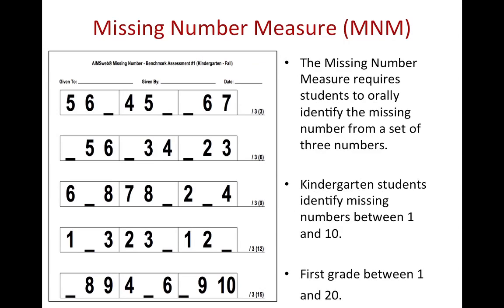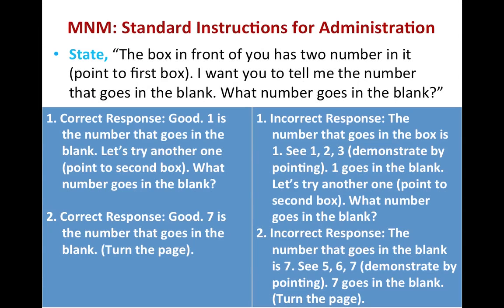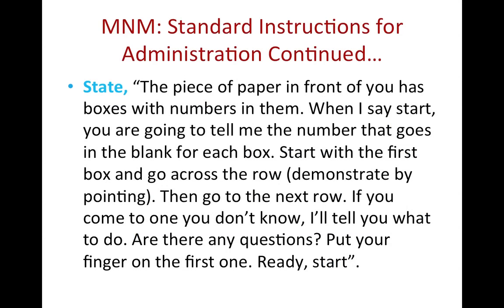The Missing Number Measure requires students to orally identify the missing number from a set of three numbers. Kindergarten students will identify missing numbers between 1 and 10, and first grade students will identify missing numbers between 1 and 20. The instructions state: 'The box in front of you has two numbers in it. Point to the first box. I want you to tell me the number that goes in the blank. What number goes in the blank?' You would then follow the printed guidelines depending upon whether the student gives a correct or incorrect response. The timed administration instructions state: 'The piece of paper in front of you has boxes with numbers in them. When I say start, you are going to tell me the number that goes in the blank for each box. Start with the first box and go across the row, then go to the next row. If you come to one you do not know, I will tell you what to do. Are there any questions? Put your finger on the first one. Ready? Start.' Once the student begins, you would start timing for one minute.